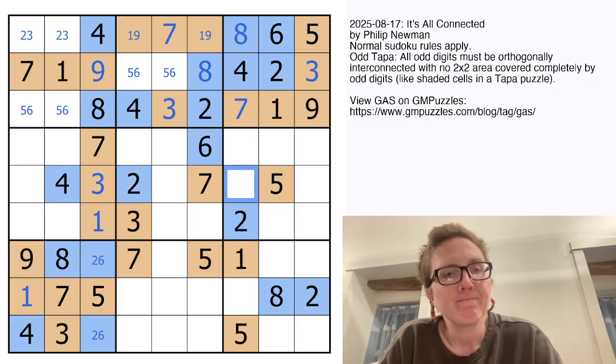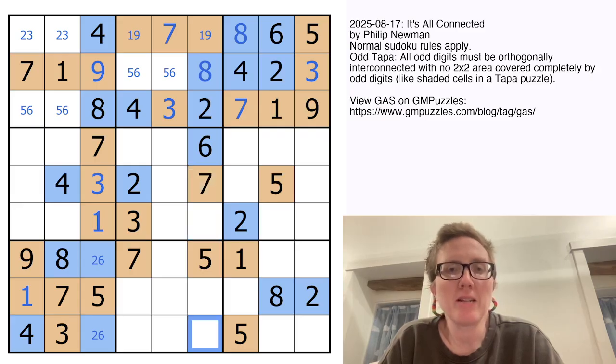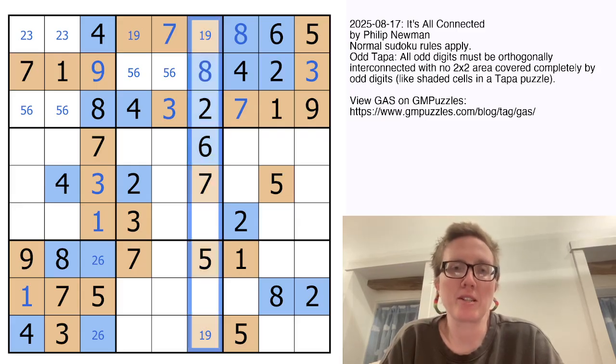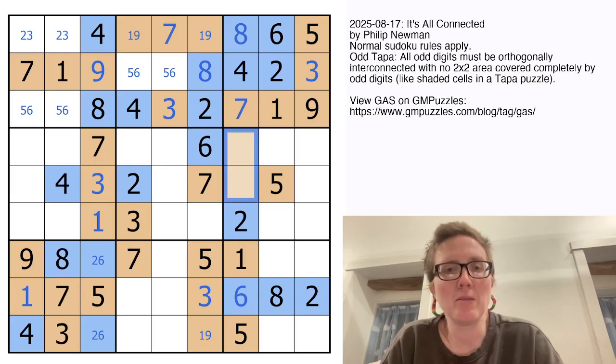What next? So this cell can't be a two, four, six, or eight because it sees all of those. So this is going to be odd. So it's going to be either one or nine. And now we still need a three in this column, which can't go there because there's a three in the region. So the three is going to go right there. Now this cell has to be even because if it was odd, we would have multiple two by twos there. So this is going to be even, making it a six. And these two digits in the column will be odd. Those will be our three and our nine.